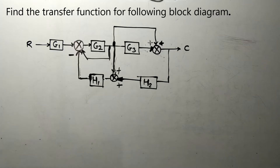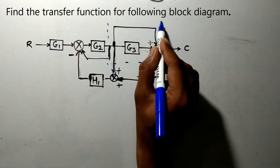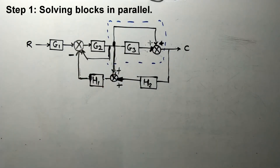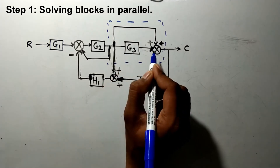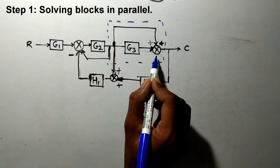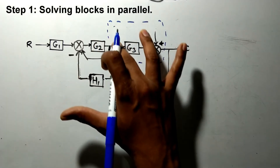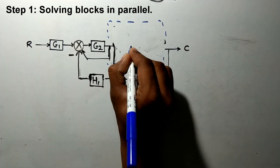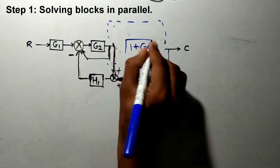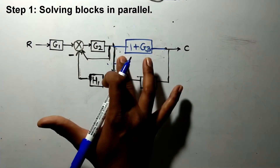First I would like to use the rule for series blocks, parallel blocks, or a feedback loop. You can see that this is a parallel loop, so we can solve these blocks in parallel. The transfer function of this line is unity, that is 1, therefore the resultant is the algebraic sum of these blocks. I will reduce it into a single block that is 1 plus G3. So my transfer function block for this will be 1 plus G3 and this system is now replaced by a single block. This is step number 1.